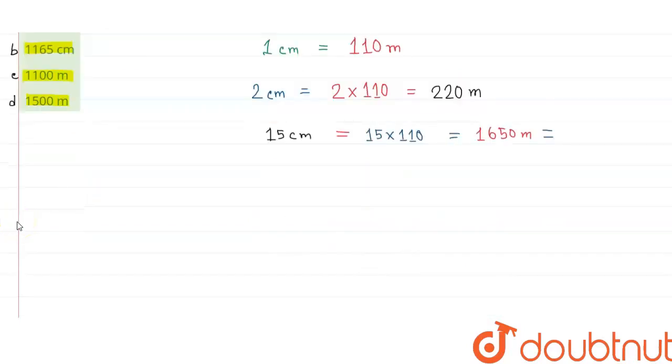ओके? और अगर मैं इस 1650 m को km में लिखना चाहूँ, तो क्या करूँगा? 1000 से divide करूँगा. जिसका result क्या आएगा? 1.65 km.